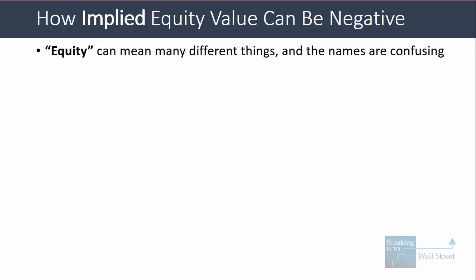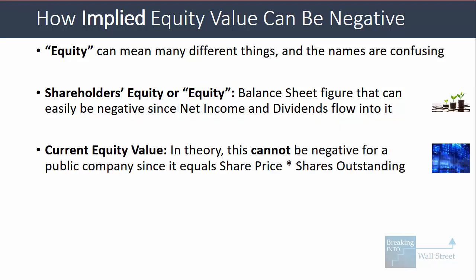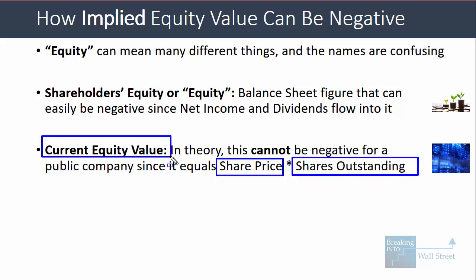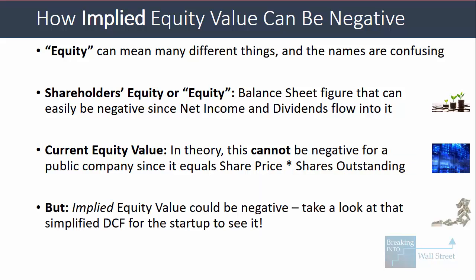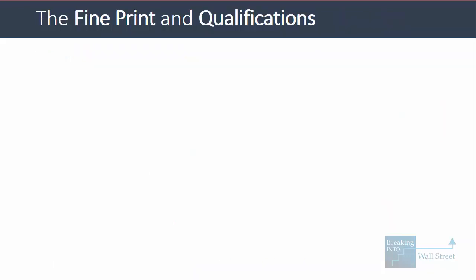Now let's talk about how equity value might be negative. Equity can mean many different things. Any type of equity shown on the balance sheet can easily be negative if net income is negative over a long period, or if the company is paying out too much in dividends or does a dividend recapitalization. Current equity value in theory cannot be negative — it equals share price times shares outstanding, and neither can be negative. However, implied equity value could easily be negative: it means you're putting in a lot of cash and not getting much back.